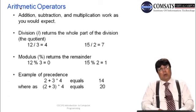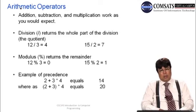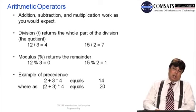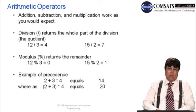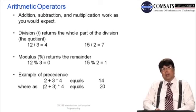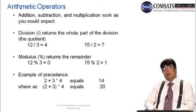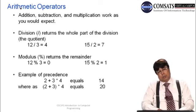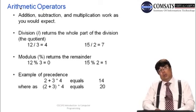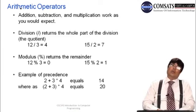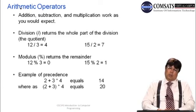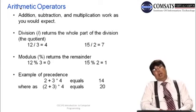The modulo operator (%) returns the remainder. 12 modulo 3 = 0 (remainder is 0). 15 modulo 2 = 1 (remainder is 1). So with the slash operator we pick up the quotient, and with the modulo operator we pick up the remainder.